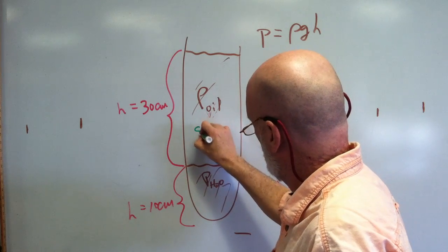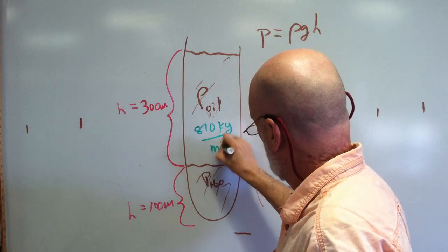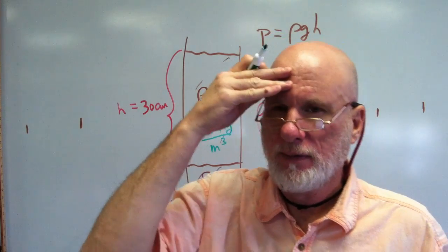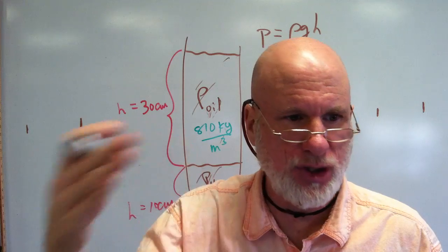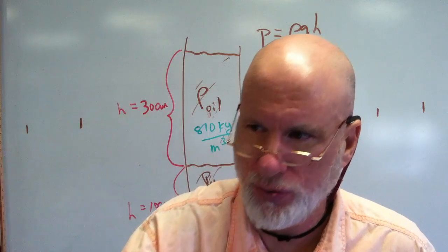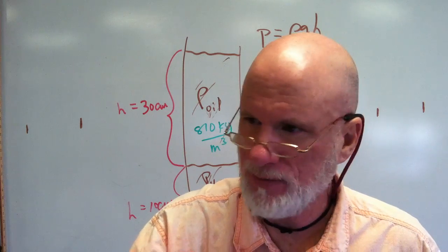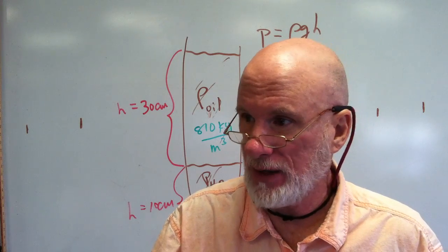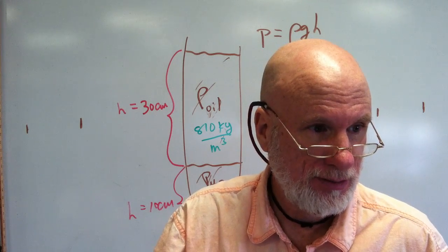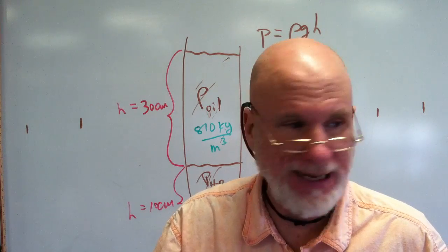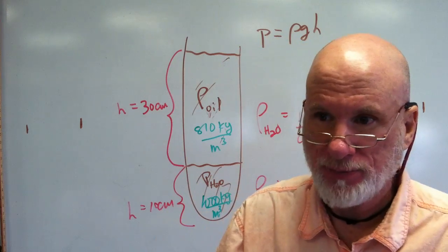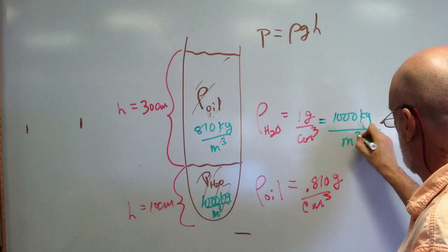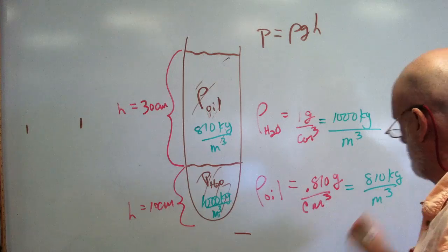The oil density is 810 kilograms per cubic meter and water is 1,000 kilograms per cubic meter. When converting from grams per cubic centimeter to kilograms per cubic meter, you simply move the decimal place three places to the right and change the unit labels. So 1 g/cm³ becomes 1,000 kg/m³, and 0.810 g/cm³ becomes 810 kg/m³.